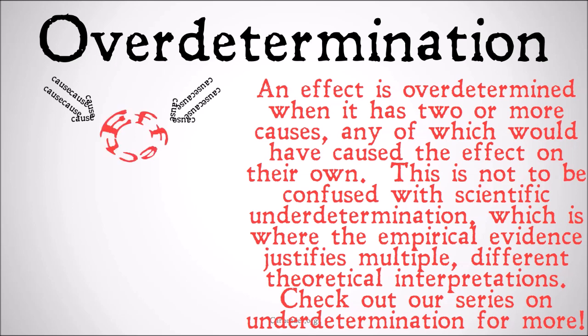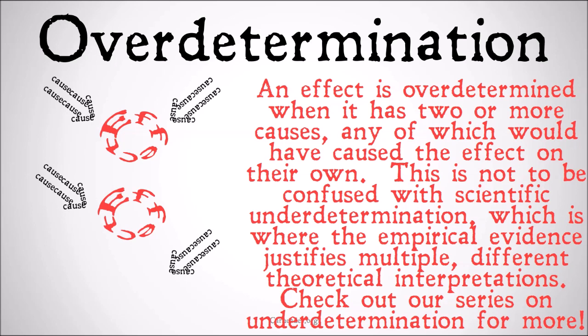As you see, we have two causes that cause a single effect. But if we only had one cause, that effect would still happen, or if we only had the other cause, that effect would still happen. Therefore, our original effect is over-determined — it has multiple sufficient causes.